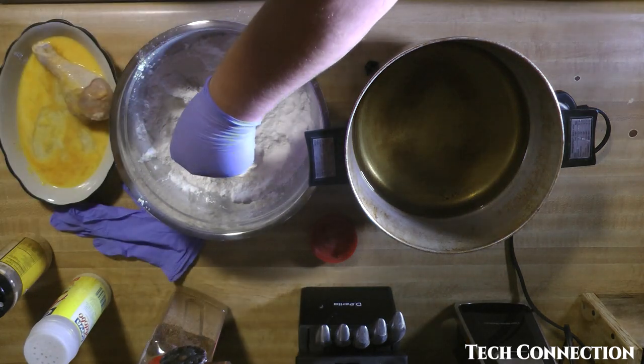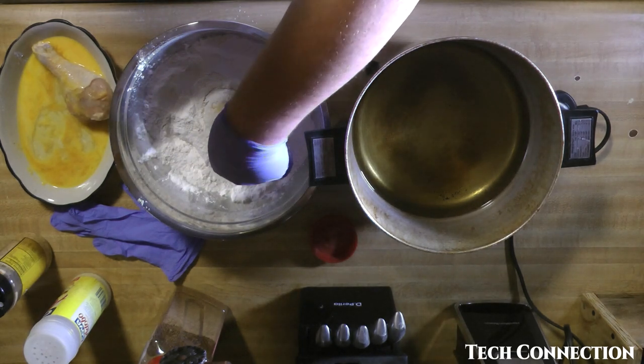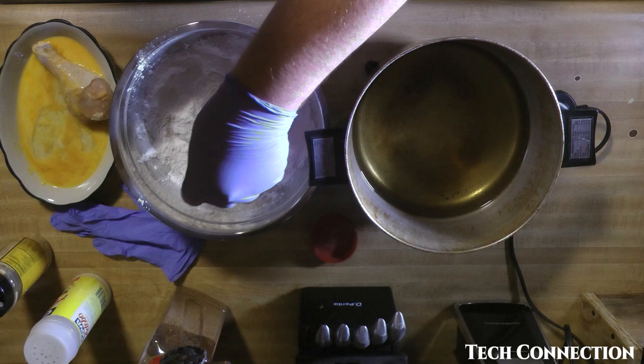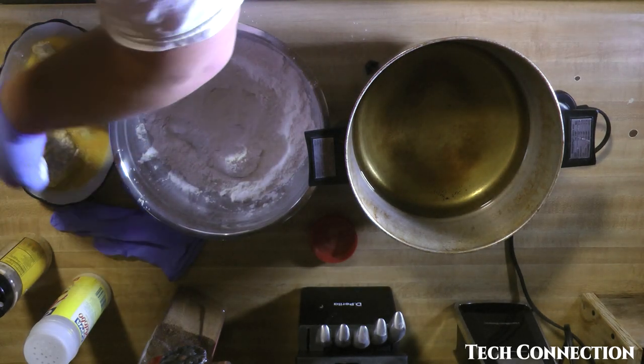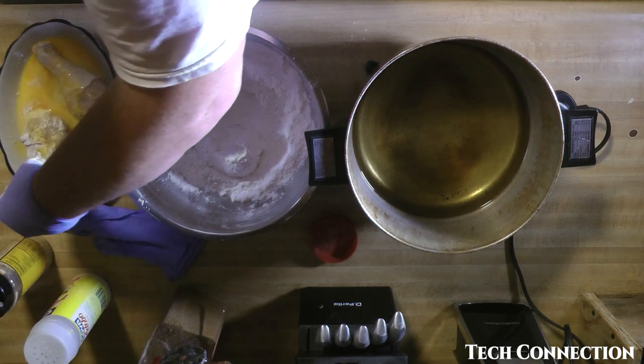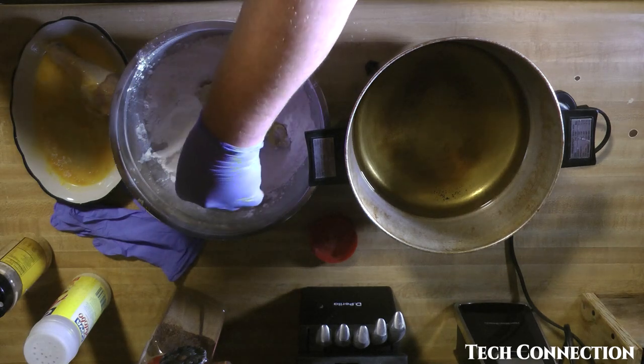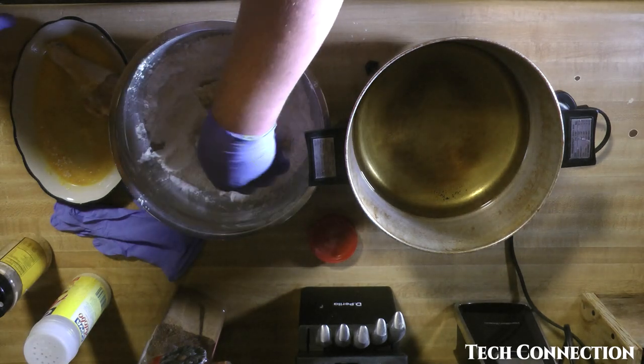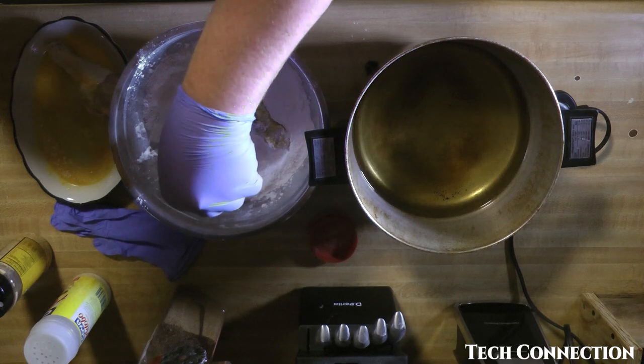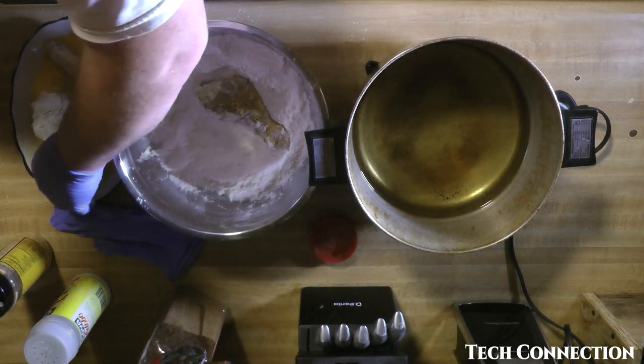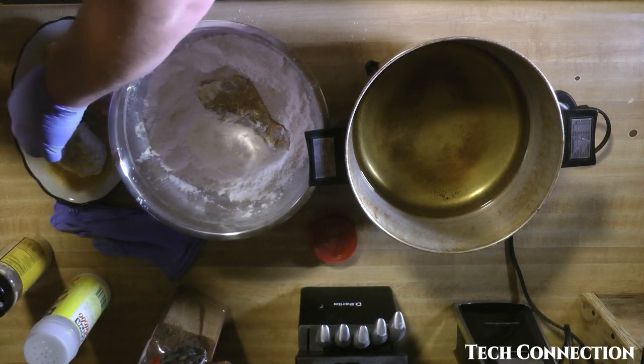So now what I'm going to do is I'm going to go back over here to the egg wash. I'm just going to put up an egg wash. Get that skin pulled down a little bit. Circumcise the chicken a little bit. Just doing both sides.